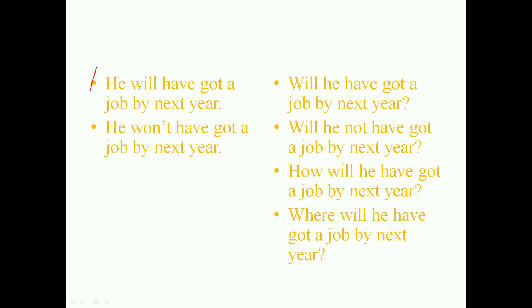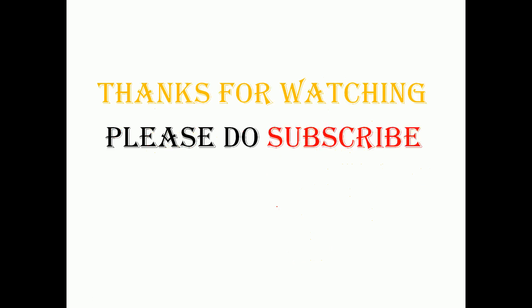He will have got a job by next year. To form a question: 'Will he have got a job by next year?' Negative: 'He won't have got a job by next year.' Negative question: 'Will he not have got a job by next year?' WH-questions: 'How will he have got a job by next year?' or 'Where will he have got a job by next year?' Like this we frame different types of sentences in this tense.